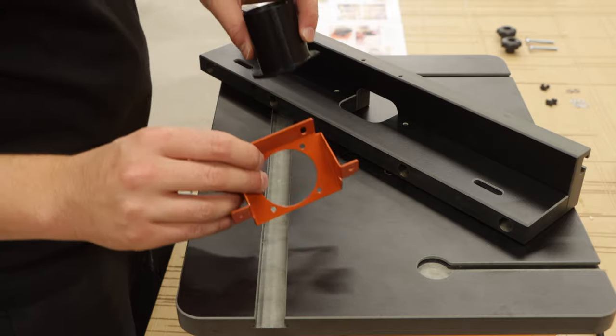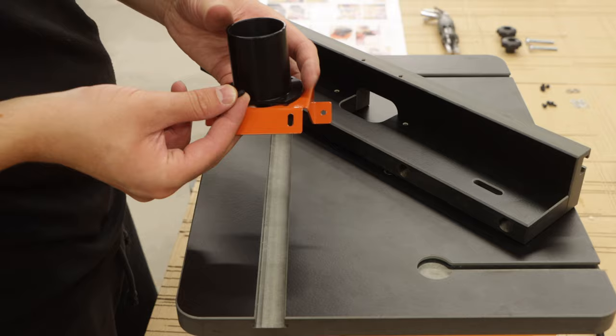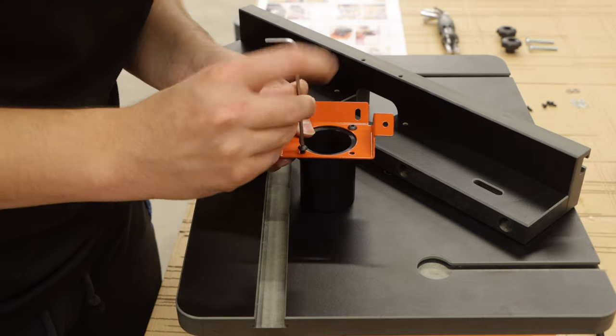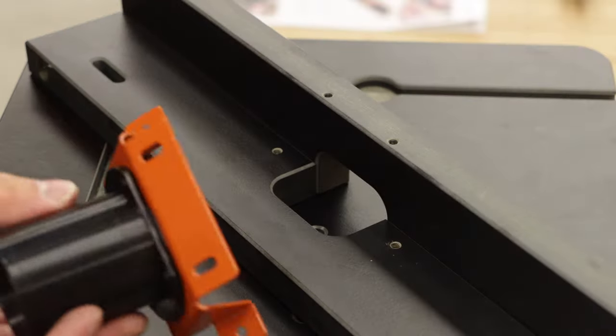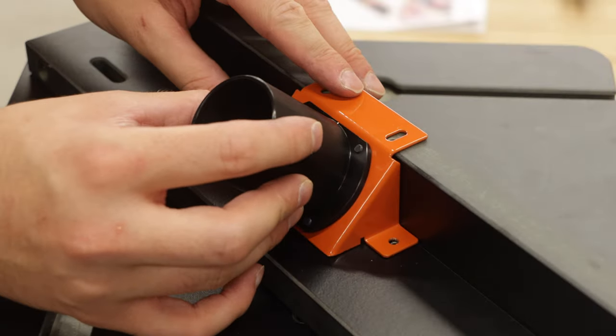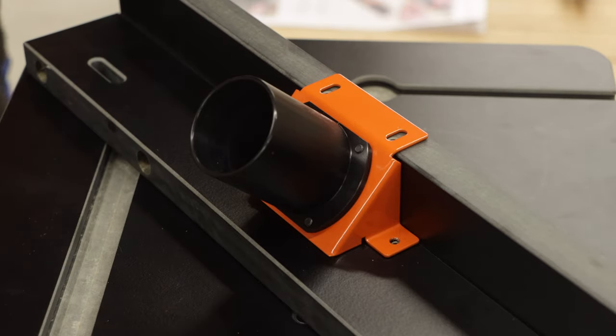The dust shroud and port are both metal and this port fits most workshop vacuums. This dust port fits onto the fence like that and also gets secured on with four bolts and four washers.